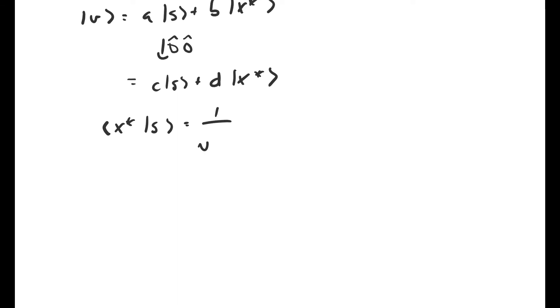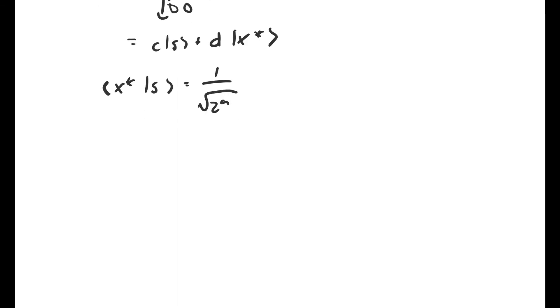So I'm going to define another vector s double prime that is orthogonal to x star. The way we achieve this is just by taking s and subtracting off the x star piece of s. So now the inner product of x star and s double prime is zero.